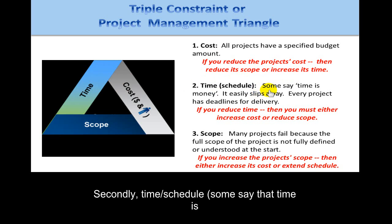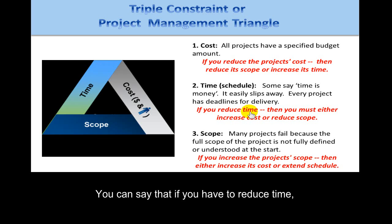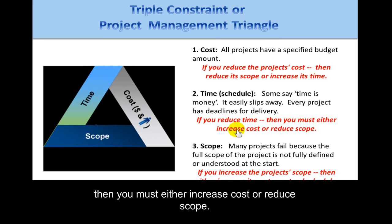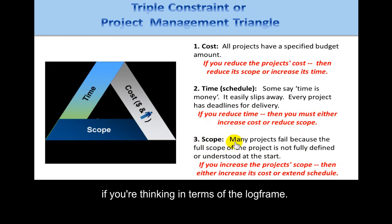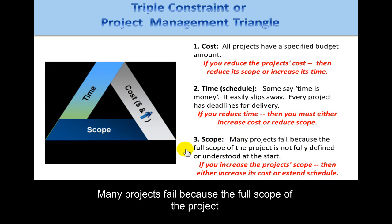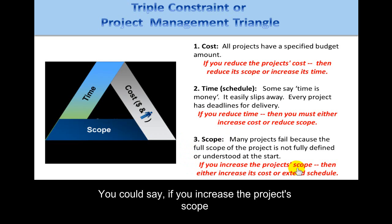Second is time or schedule. Some say that time is money — it easily slips away, and every project has deadlines for delivery. If you have to reduce time, then you must either increase cost or reduce scope. The third component is scope, which often equates to the outputs if you're thinking in terms of the log frame. If you increase the project's scope, then either increase its cost or extend its schedule.